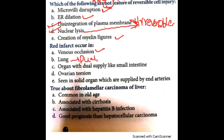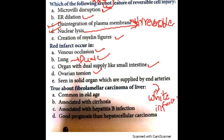Red infarct occurs in venous occlusion. In the lung there is dual blood supply, so red infarct is seen. Organs with dual blood supply like the small intestine — true, you will see red infarct. In ovarian torsion also you will see red infarct. In solid organs supplied by end arteries you will see white infarct, not red infarct.